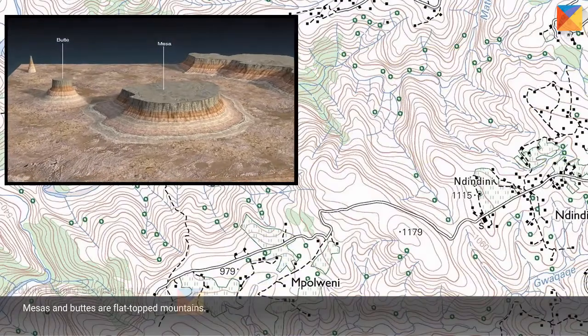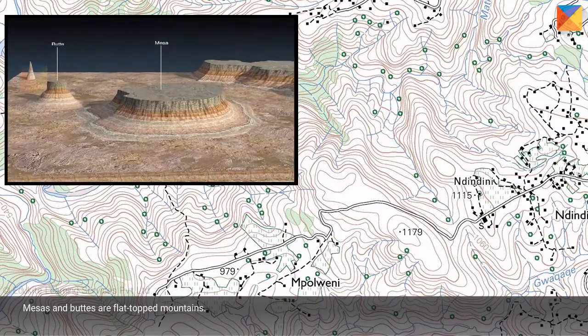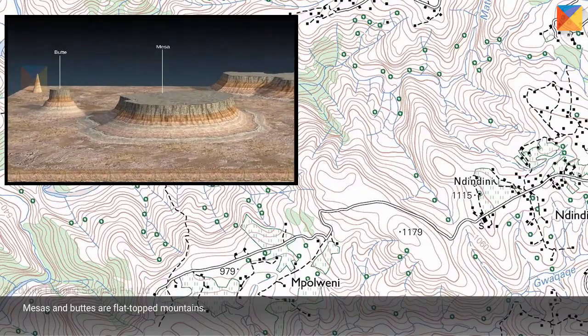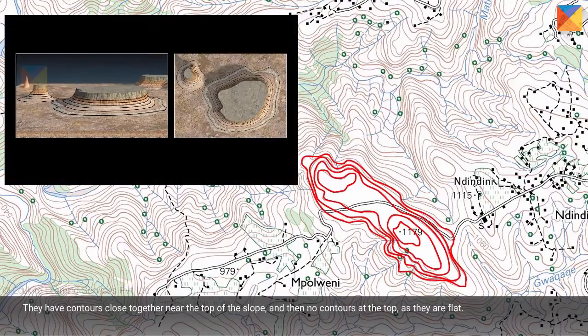Mesas and buttes are flat-topped mountains. They have contours close together near the top of the slope, and then no contours at the top, as they are flat.